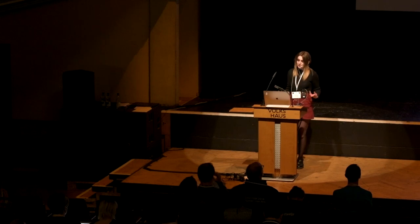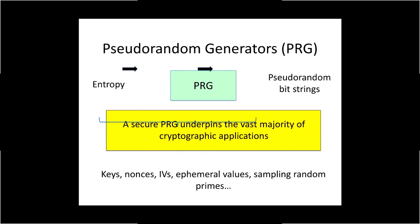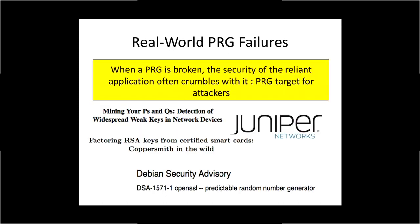Randomness is essential for cryptography, and as such, a secure PRG underpins the majority of cryptographic applications. At the same time, there's a growing list of real-world PRG failures which bear out the fact that when an underlying PRG is broken, the security of the reliant application falls apart with it. This makes exploiting a weakness in the underlying PRG a highly attractive target for attackers.